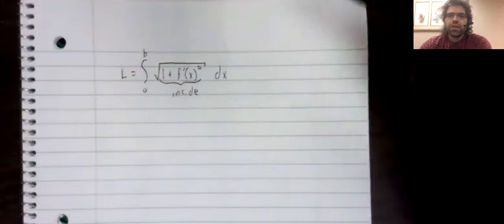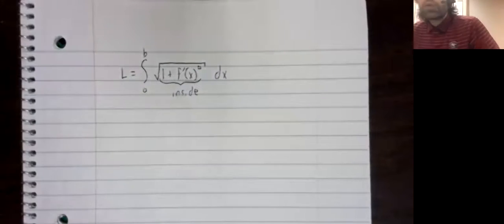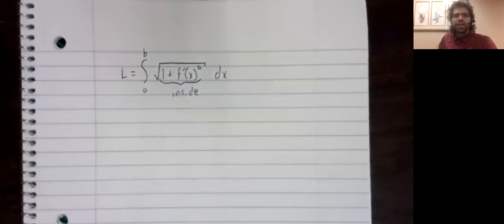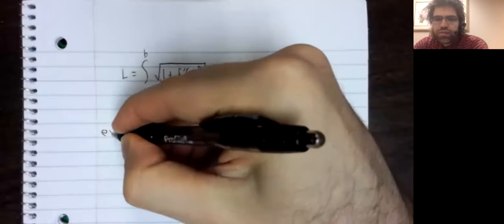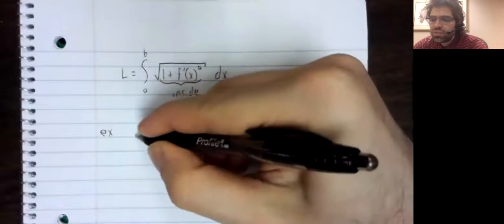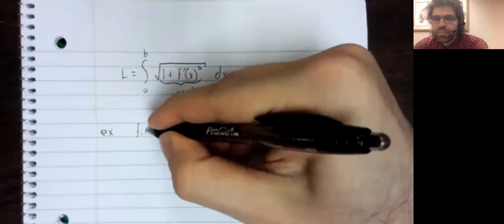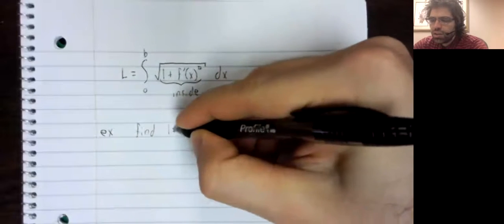you need to be multiplying by the derivative of this inside function. Here, as you can see, we are not multiplying by anything.